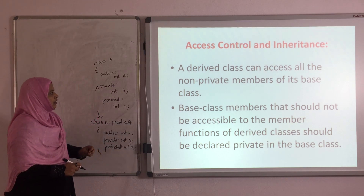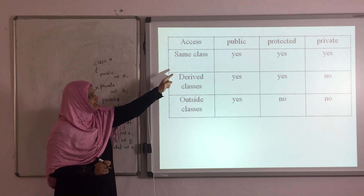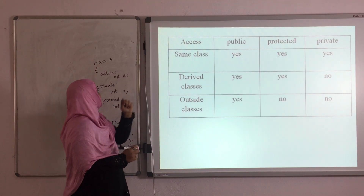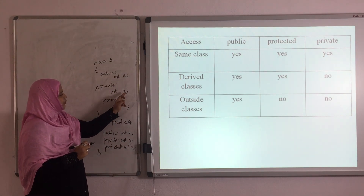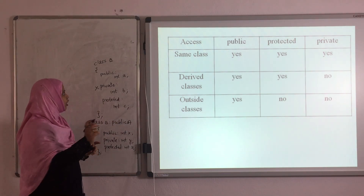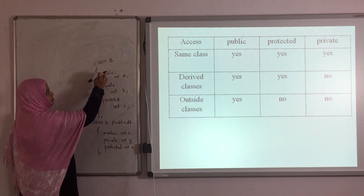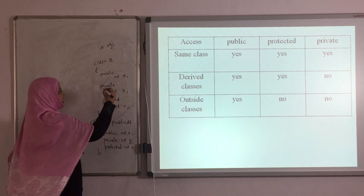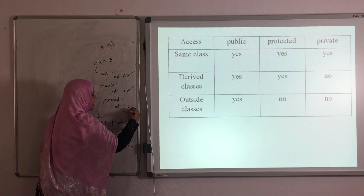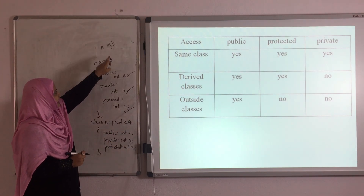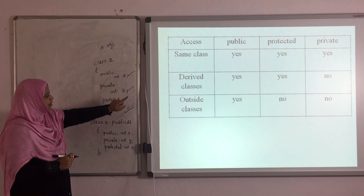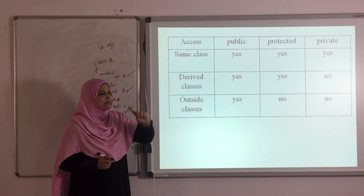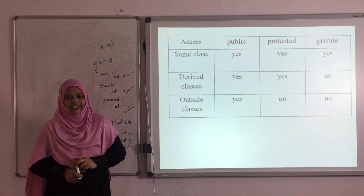Next slide. Here, see the access specifier table — same class, derived class, and outside the class. In class A, A is declared in public mode, B is declared in private mode, and C is declared in protected mode. Now if I am going to create an object of class A, by using this object I can access variable A, I can access variable B, and I can access variable C. By using the object of the same class, we can access the public, protected, and private data members.